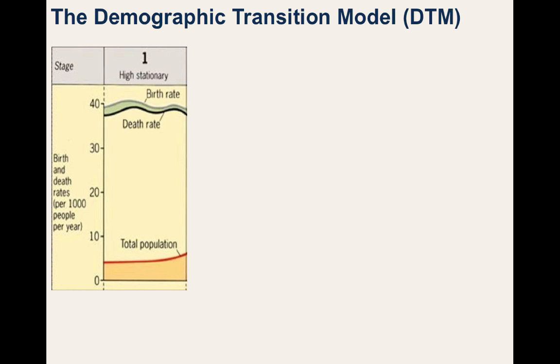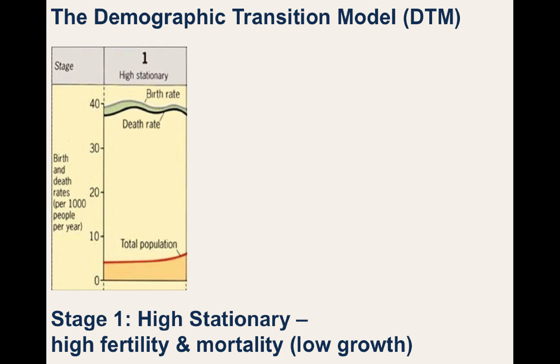Early demographers used statistics primarily from churches in Great Britain and noticed that up to around the mid-1700s, birth rates and death rates were generally both very high. Great Britain, and every other region of the world, was in Stage 1 of the DTM, known as the High Stationary Stage because there was very low population growth. On the graph, you can see birth rates generally higher than death rates over time.